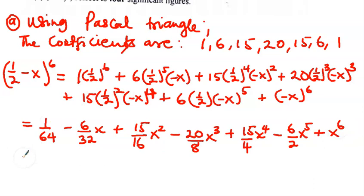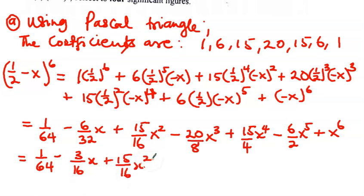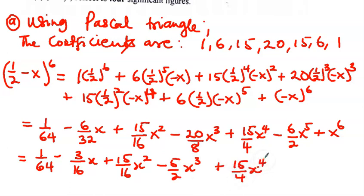So when we simplify finally, we get: 1/64 minus 3/16 x plus 15/16 x squared minus 5/2 x cubed plus 15/4 x to the power 4 minus 3x to the power 5 plus x to the power 6. That is the answer to part (a).